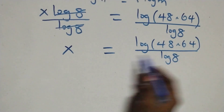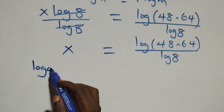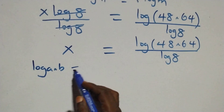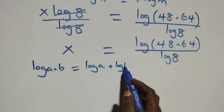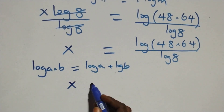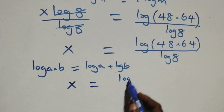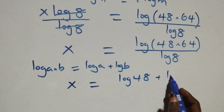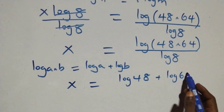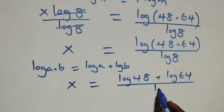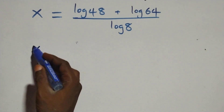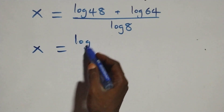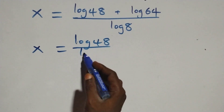This follows from the logarithm product rule: log(a times b) is the same as log a plus log b. So we have x equals log 48 plus log 64, all over log 8. We then separate this into two fractions: x equals log 48 over log 8 plus log 64 over log 8.